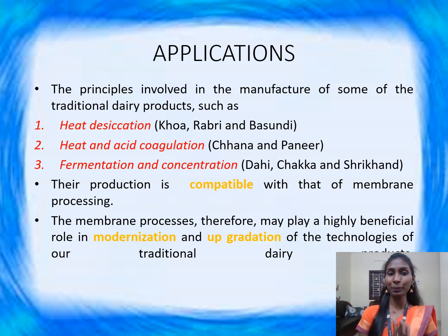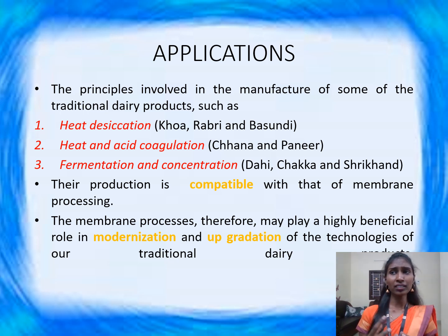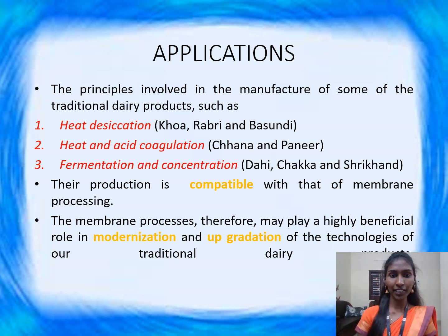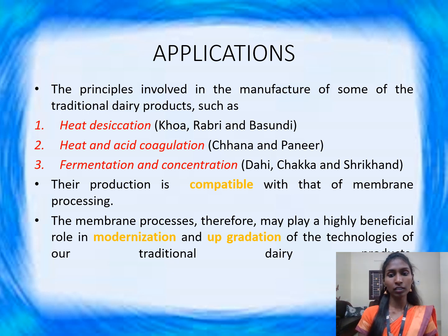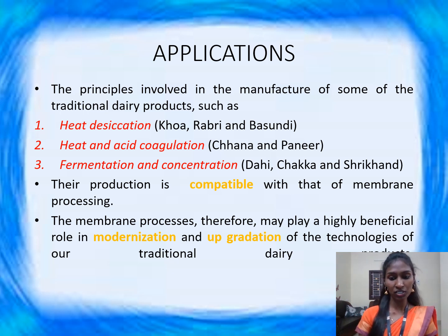Here are some applications of membrane processing technology in the dairy industry. It can be used for preparing heat-desiccated products like khoa, rabri, and basundi; heat- and acid-coagulated products like chhana; paneer; fermented and concentrated dairy products such as dahi and chakka. It is very compatible compared to other novel processing technologies and has a future in the modernization of traditional dairy products.